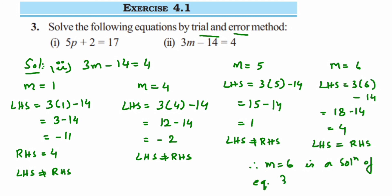The equation is 3m minus 14 equal to 4. This is the trial and error method — we don't know for which value it will satisfy, so we keep substituting different values and try until one satisfies. I hope you have understood. In case you have a doubt or a question, you can drop a comment below. Thank you so much for watching.